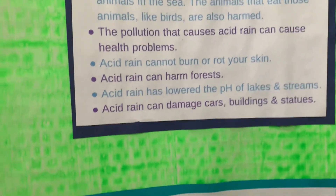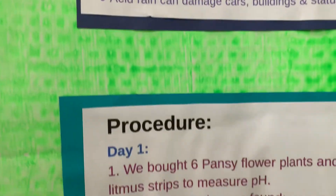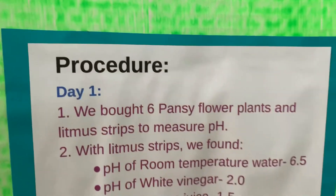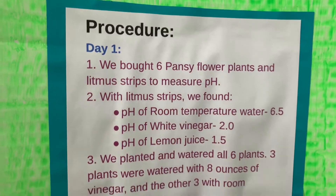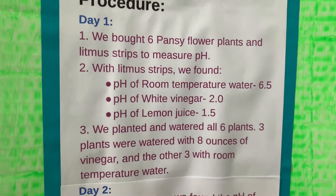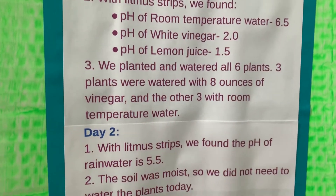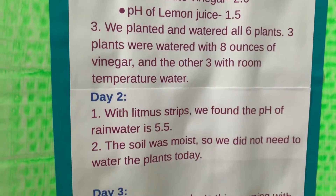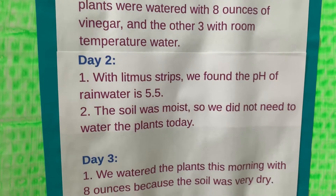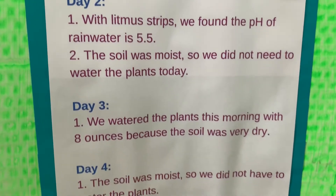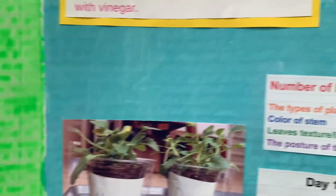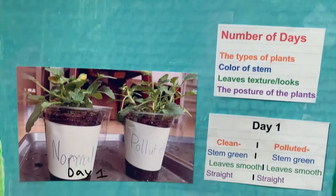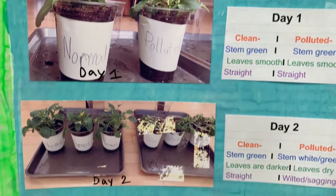Our procedure was, we got six plants. We watered three with water for normal plants, and we watered three with vinegar to represent acid rain — those were the polluted plants. We watered them each day for four days, and on day four, the normal plants had sprouted flowers, and the polluted plants were crispy and dry, and they looked dead.